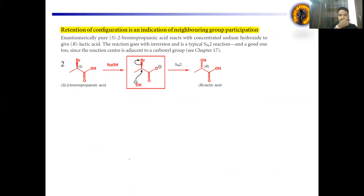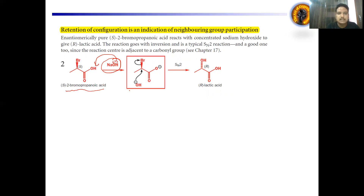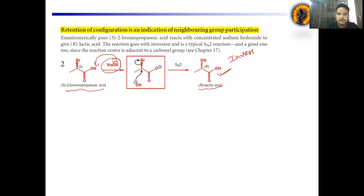Another example illustrating retention: starting material is S-2-bromopropanoic acid treated with concentrated NaOH. NaOH is a nucleophile, the hydroxide abstracts hydrogen, makes O-negative, then the O-negative attacks the anti-bonding orbital of the C-Br bond via SN2 to give inversion. We start with S-2-bromopropanoic acid and end with R-lactic acid. This is complete SN2 with inversion in configuration.